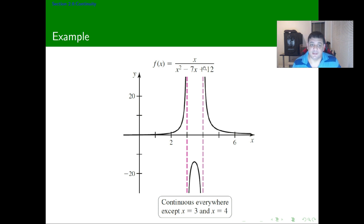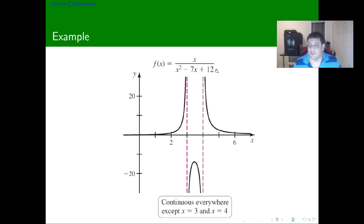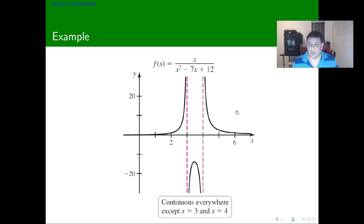An example is the function f(x) = 1 / (x² − 7x + 12). Notice that x² − 7x + 12 has zeros at 3 and at 4. Those particular points represent asymptotes because they are zeros of the denominator and cannot be cancelled with anything on top. So this function is continuous everywhere except at x equals 3 and x equals 4.